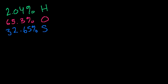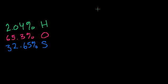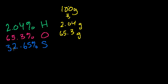So what we do, like we do in all of these problems, let's just assume we've got 100 grams of the stuff. So if we assume 100 grams, if I have 100 grams, how many grams of hydrogen do I have? 2.04% of that is hydrogen, so I have 2.04 grams of hydrogen, 65.3 grams of oxygen, and 32.65 grams of sulfur.